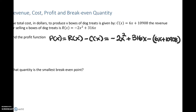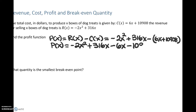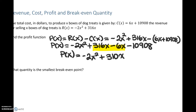Distributing the negative, we're going to come up with a profit function which is negative 2x squared, plus 316x, then distribute the negative to get minus 6x, minus 10,908. Combining those two like terms, we end up with negative 2x squared plus 310x minus 10,908.